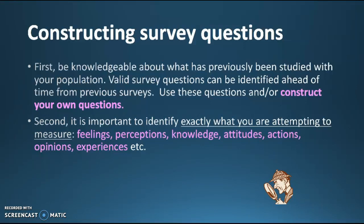Second, it's important to identify exactly what you're attempting to measure. Maybe you want to do something on marijuana laws. Would you want feelings, perceptions, knowledge, attitudes, actions, opinions, experiences, or identities? Because all of those would get at different elements of marijuana laws. So what do you want? Maybe you want more than one thing, and that's fine, but you have to decide that in advance.